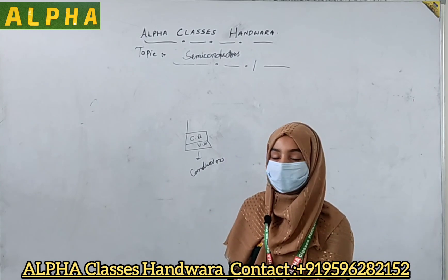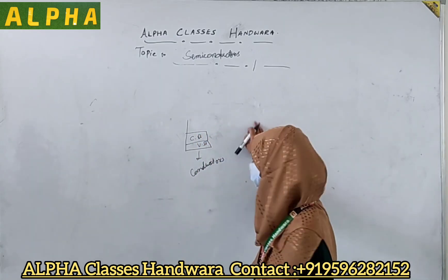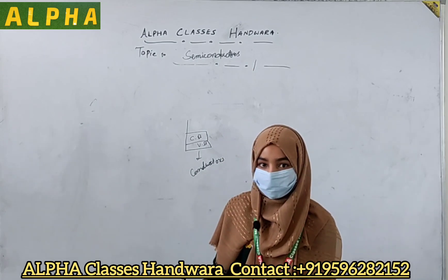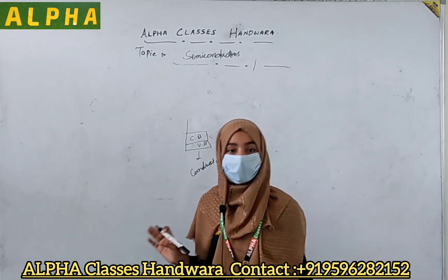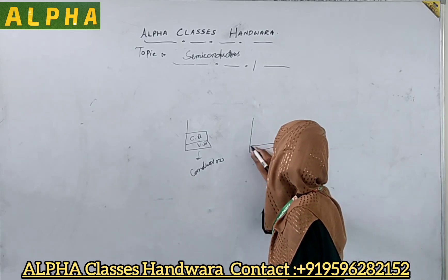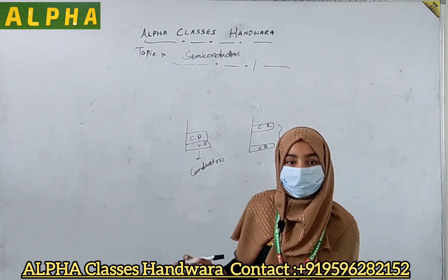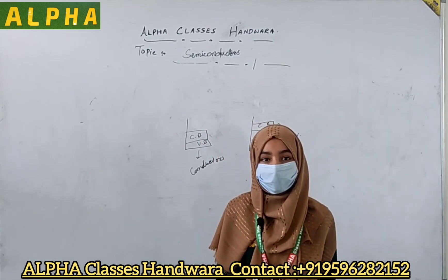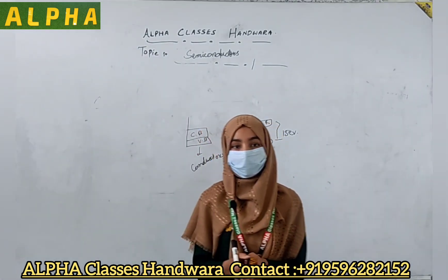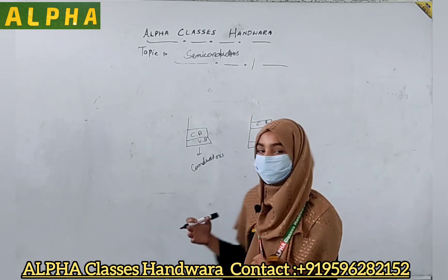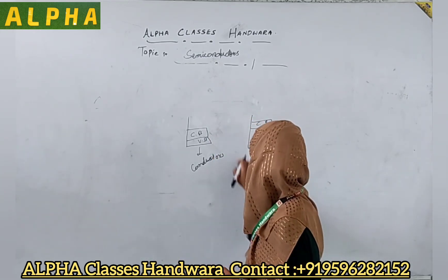What are insulators? Insulators are those materials which do not conduct electricity or do not have electrical conductivity, because they have no presence of free electrons or free charge carriers. They have a large energy difference between the valence band and conduction band of about 15 electron volts. Even if we supply energy to these insulators, they are still not able to conduct electricity because of this large energy gap.